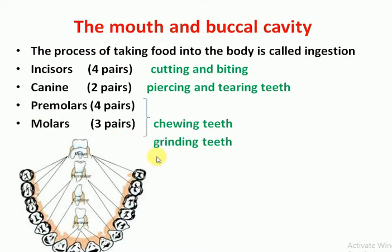We have teeth in the upper and lower jaw. Incisors are used to cut and bite; there are 4 pairs of incisors. Canines are used for piercing and tearing; there are 2 pairs of canines.